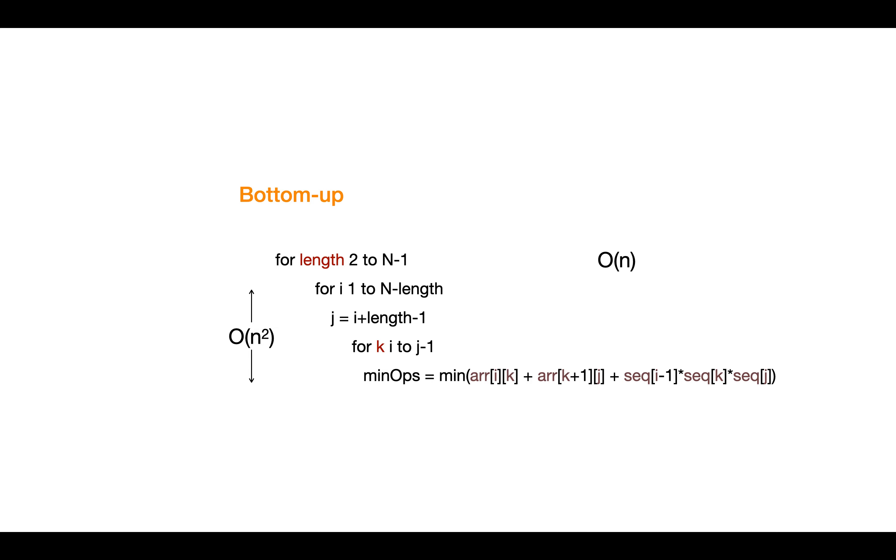Therefore, total time complexity will be polynomial, that is n to the power 3, and space complexity would be n squared for the array that we are using.